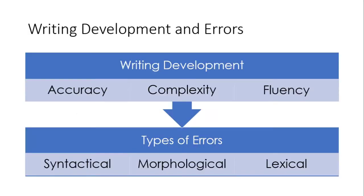Our study looks at two different areas. First, writing development — being accuracy, complexity, and fluency. We'll talk about those in greater detail shortly. With regard to accuracy, we're looking specifically at different types of writing errors: syntactical, morphological, and lexical. We'll talk about those and see some examples as well.